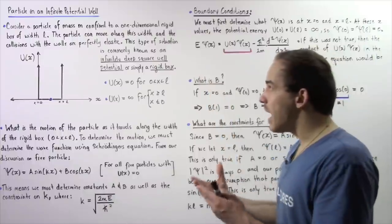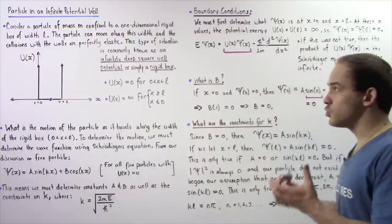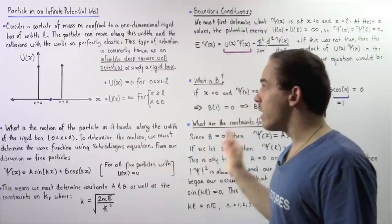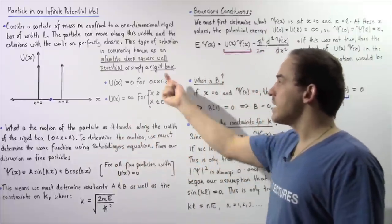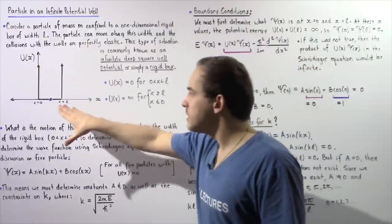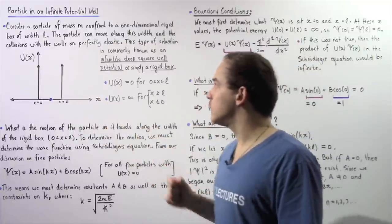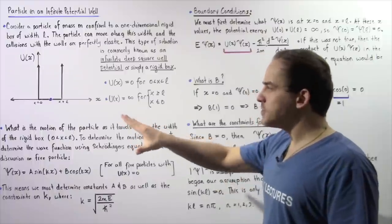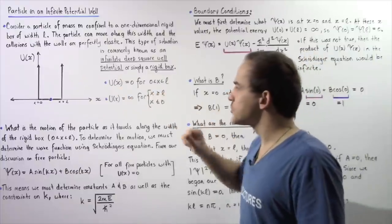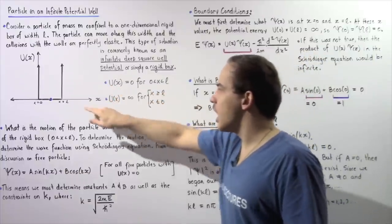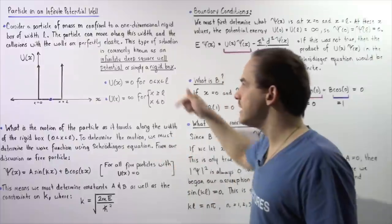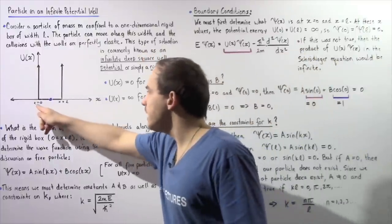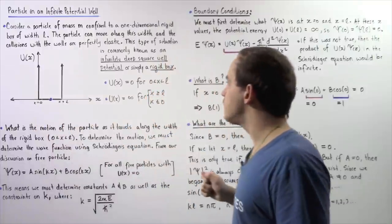This type of situation is commonly known as the infinitely deep square well potential, or simply a rigid box — a particle moving inside a rigid box. For this situation, the potential energy of the particle is equal to zero when the particle is found between the two corners of the box, i.e., when 0 < x < L.